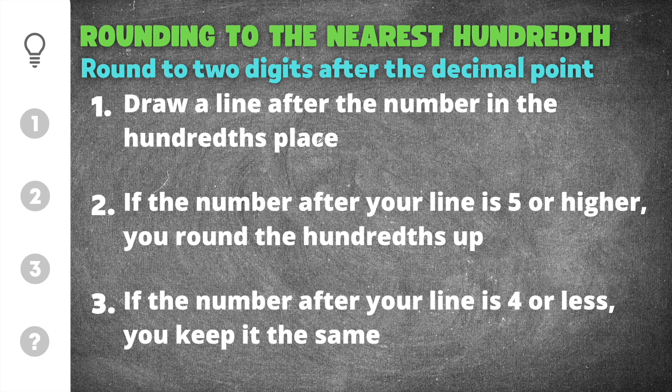As you can see, we have three important things to remember when rounding to the nearest hundredth. The first step is drawing a line after the number in the hundredths place. When you have a decimal point, this digit here is the tenths, this second number is the hundredths.